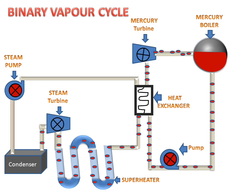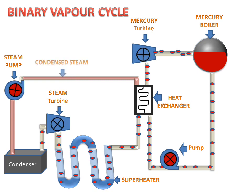The super-heated steam will go to the steam turbine. The steam turbine will start rotating, and the vapor will then go to the condenser, where it will be condensed into wet steam. The steam pump will then pump this condensed steam back to the heat exchanger, and this cycle will repeat again and again.